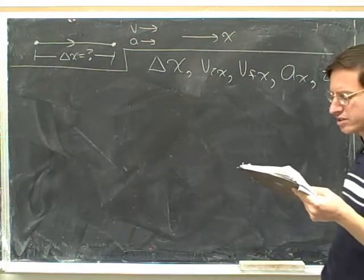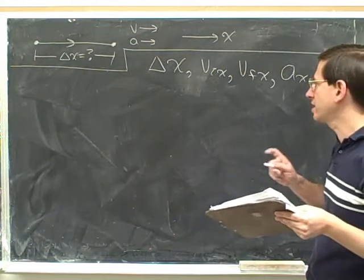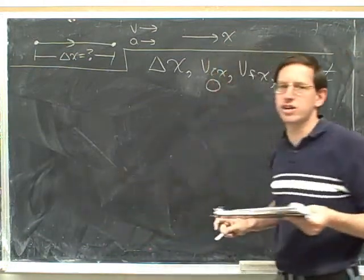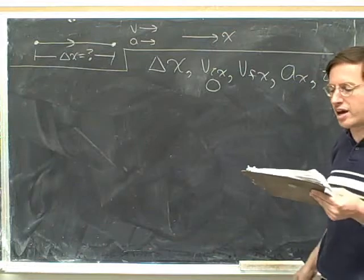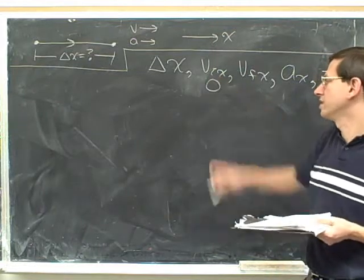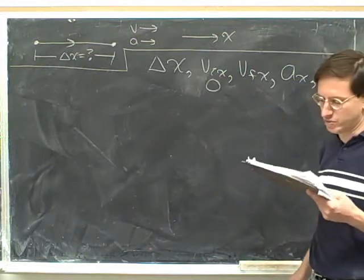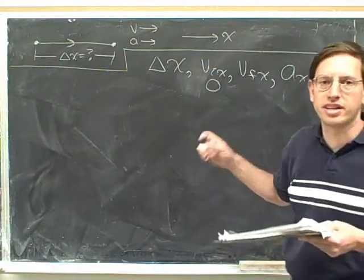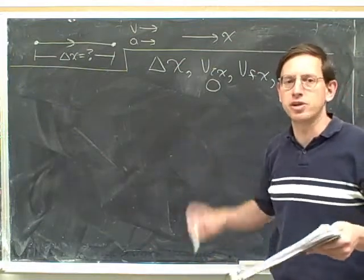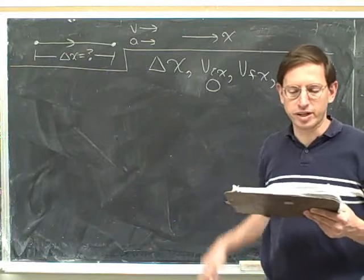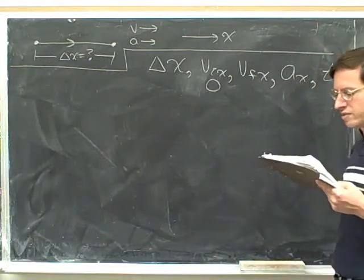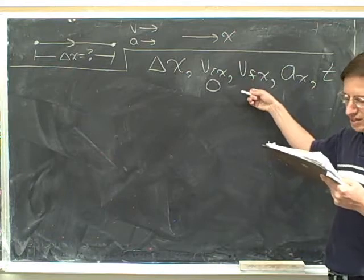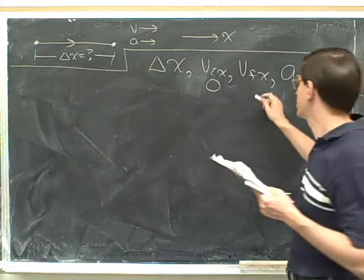An object starts from rest — that's hidden information telling us the initial velocity is zero. Remember to read carefully. An object starts from rest, so the initial velocity was zero. It accelerates uniformly — that means constant acceleration. We couldn't even use this approach if the acceleration was not uniform and constant. It accelerates to a speed of seven meters per second, so that must be the final velocity.